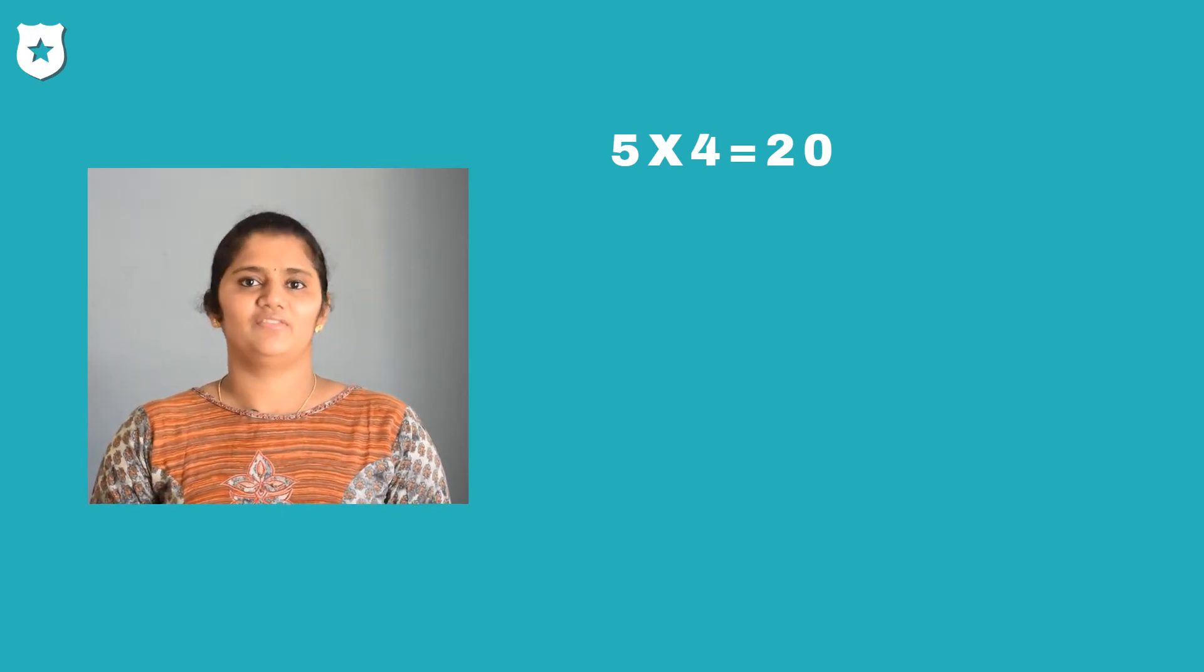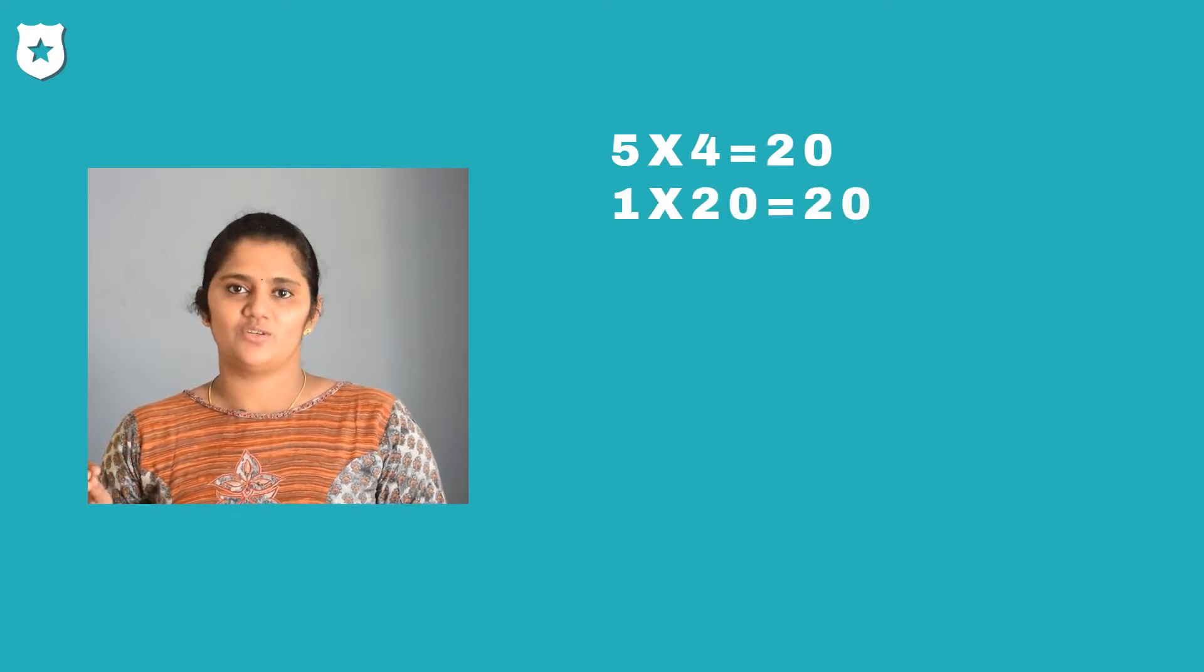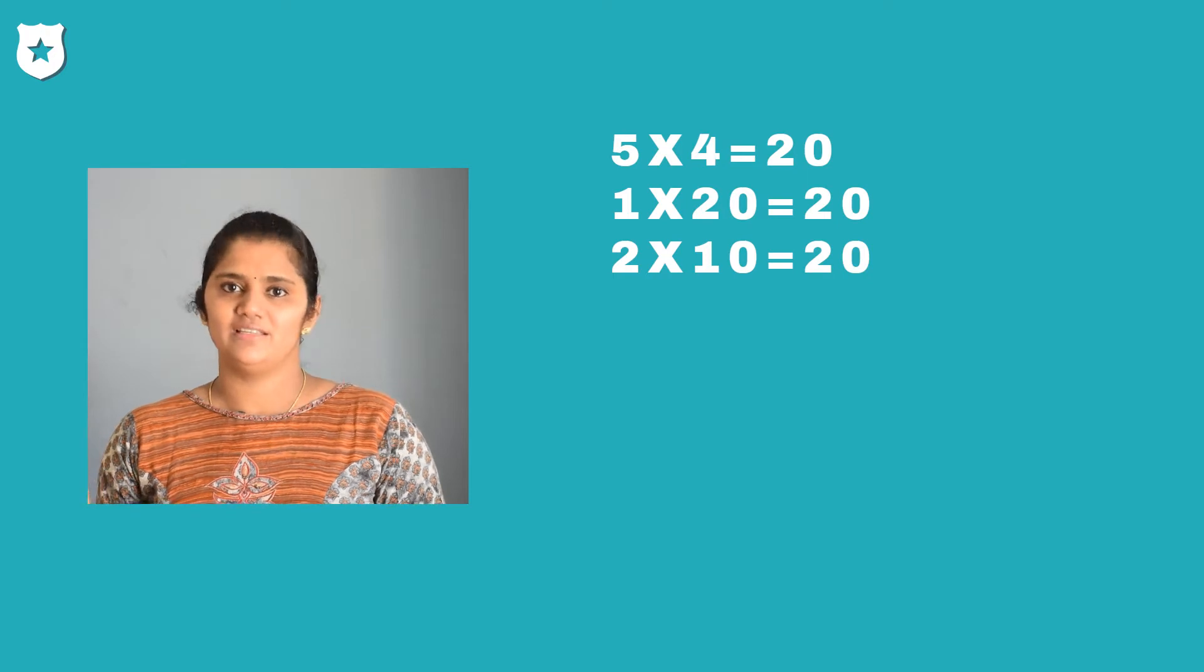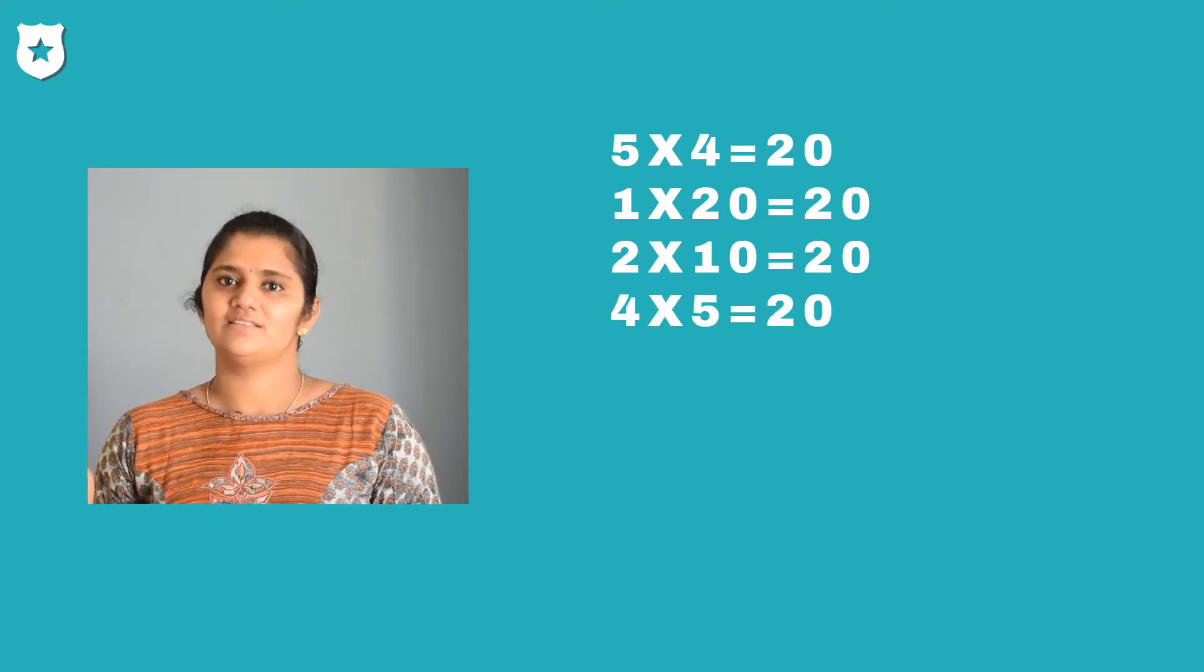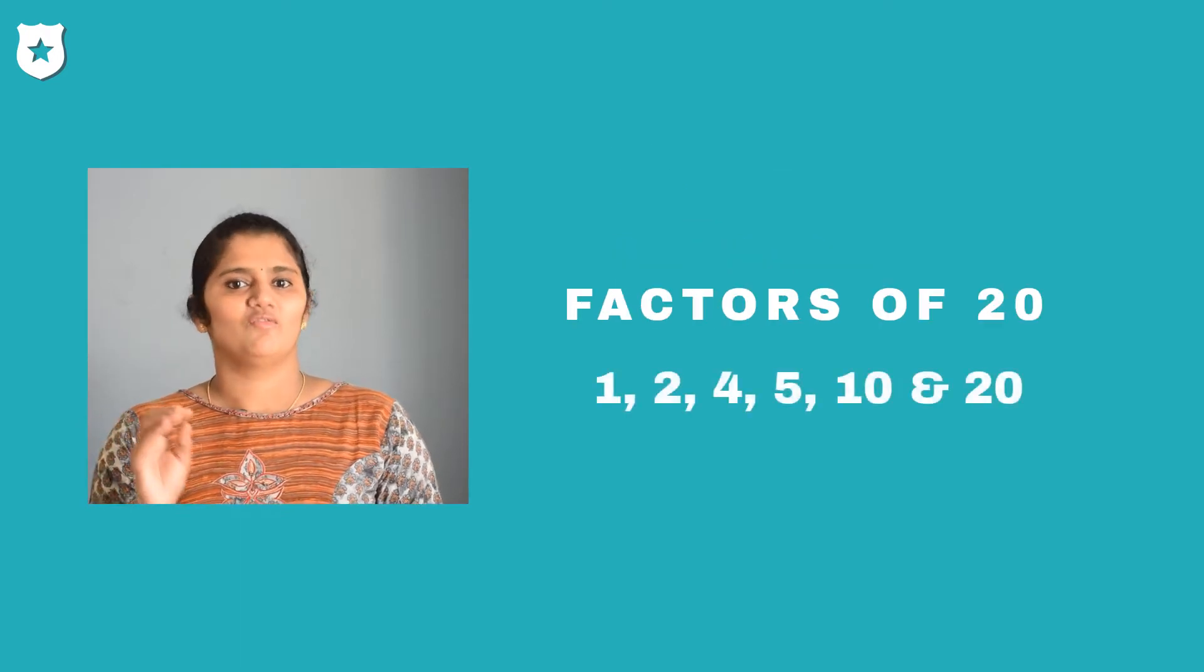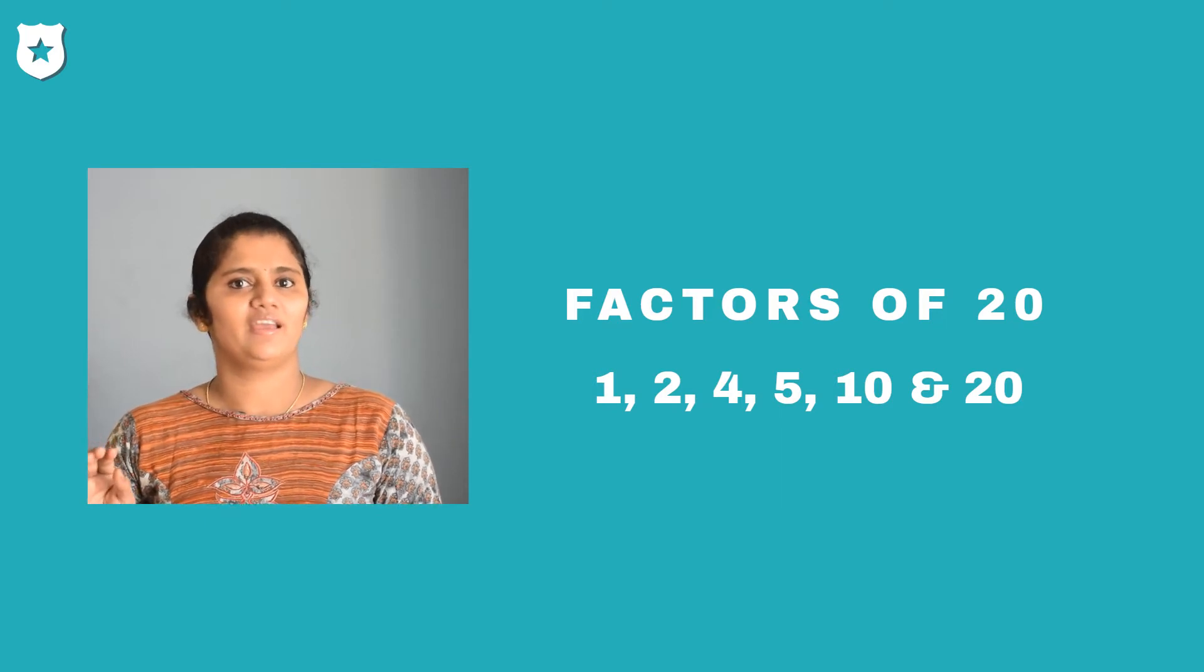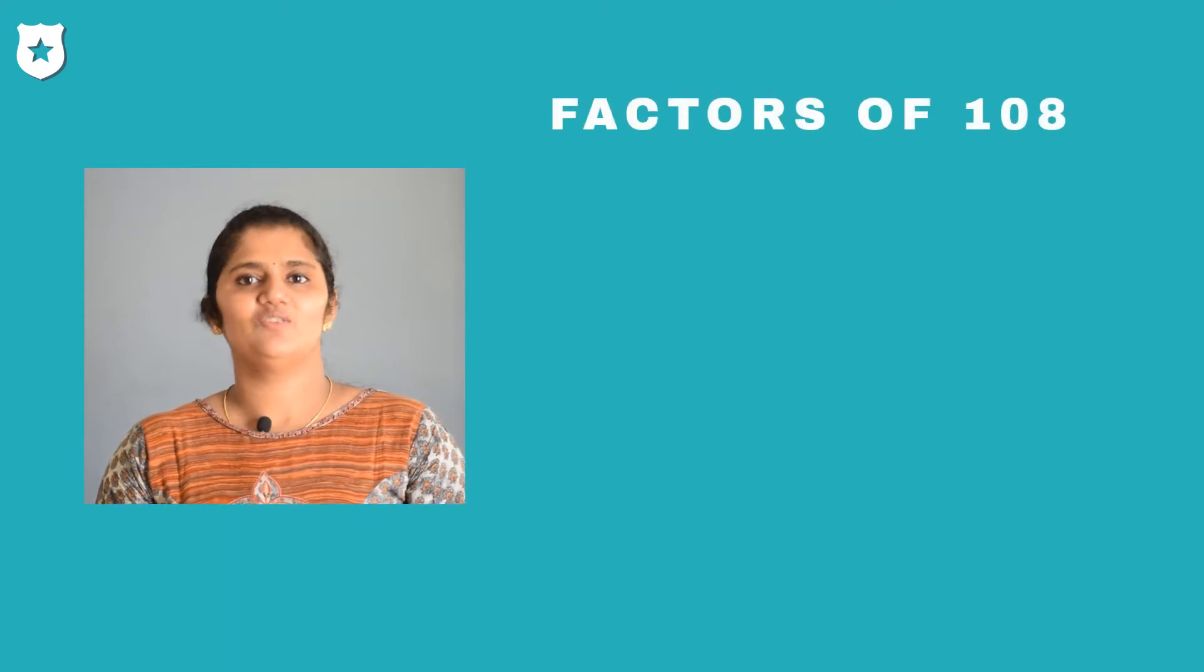Let's find out the factors of 20. We know 1 into 20 is 20, 2 into 10 is 20, 4 into 5 is 20. So the factors of 20 are 1, 2, 4, 5, 10 and 20.